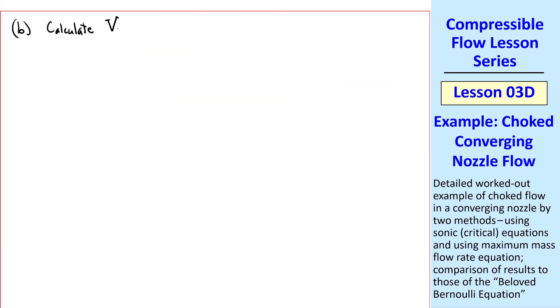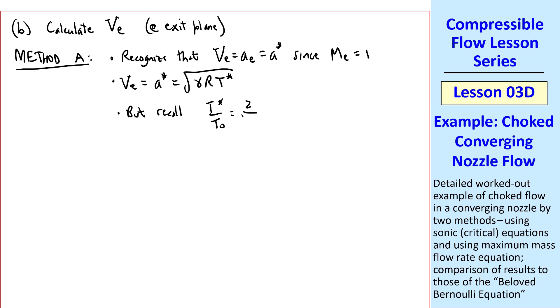Part B is to calculate VE, the speed at the exit plane. I'll do this two ways. For method A, we recognize that since the flow is choked, VE equal AE equal A star, since the Mach number at the exit plane is 1. And we have an equation for A star, namely, gamma RT star. But recall from a previous lesson, that T star over T0 is 2 over gamma plus 1 for an ideal gas. Therefore, VE is the square root of gamma RT0, T star over T0. Again, with effective use of ratios. Putting these two together, we have VE equals square root of gamma RT0, 2 over gamma plus 1.